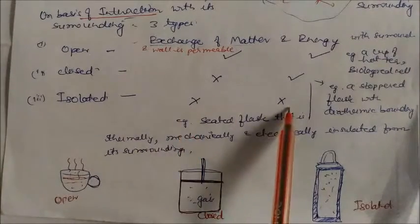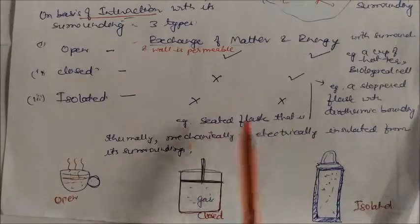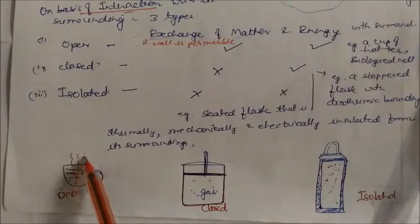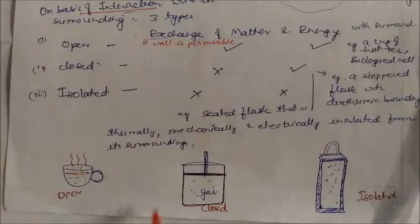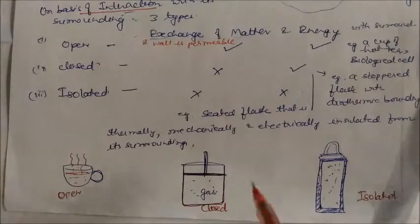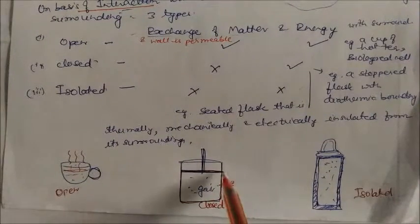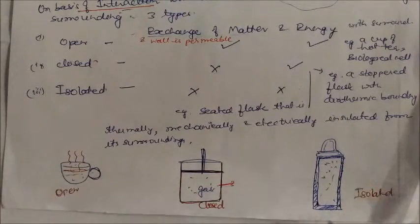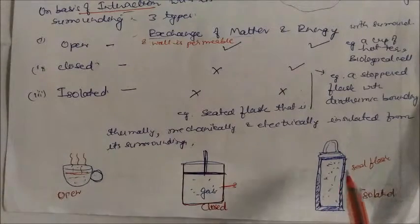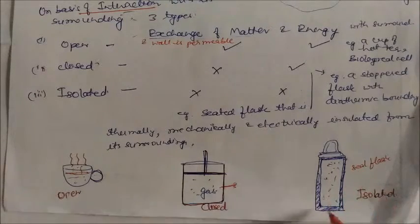In an isolated system, neither matter nor energy is transferred. An example is a sealed flask that is thermally, mechanically, and electrically insulated from its surroundings. In the diagram shown, the cup of tea is the open system where both matter and energy transfer. The closed system is covered by a piston with diathermic conducting walls, so energy but not matter can transfer. The sealed flask is totally isolated — nothing is transferred through its walls.